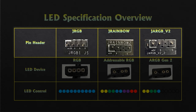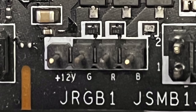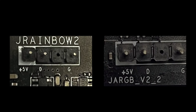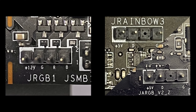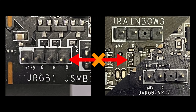The main difference of these headers is the pin layout. J-RGB headers are 4-pin 12V, while J-RAMBO and J-ARGB V2 headers are 3-pin 5V. You can easily tell that RGB and addressable RGB devices are not interchangeable by the pin layout. Installing an LED to the wrong header can lead to an interesting journey.